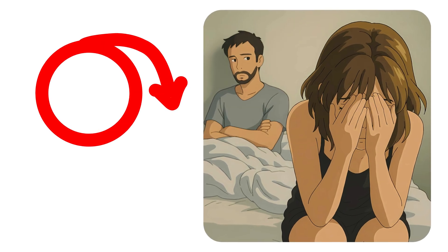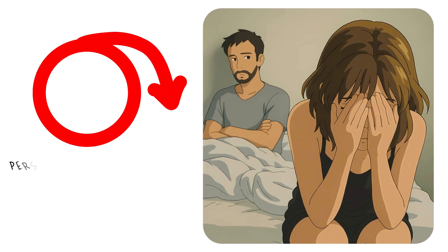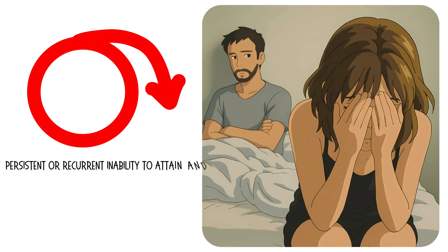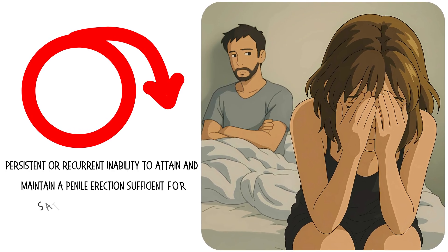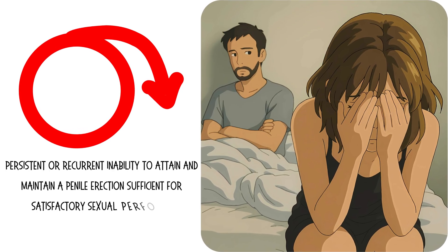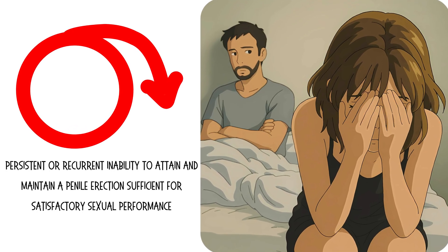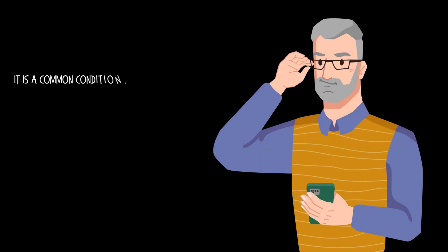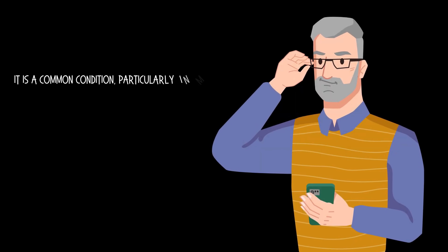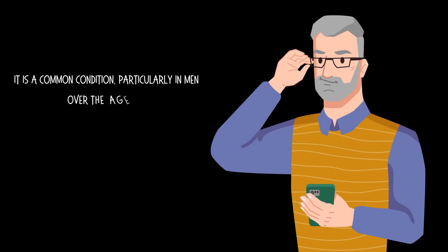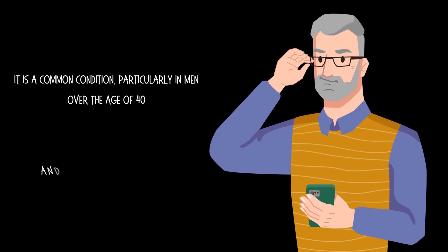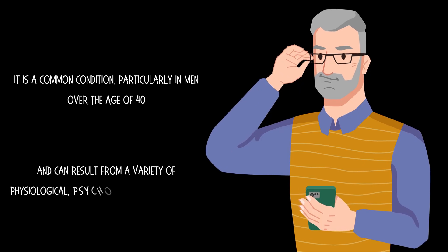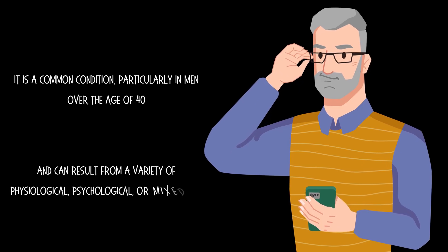Erectile dysfunction is defined as the persistent or recurrent inability to attain and maintain a penile erection sufficient for satisfactory sexual performance. It is a common condition, particularly in men over the age of 40, and can result from a variety of physiological, psychological, or mixed causes.